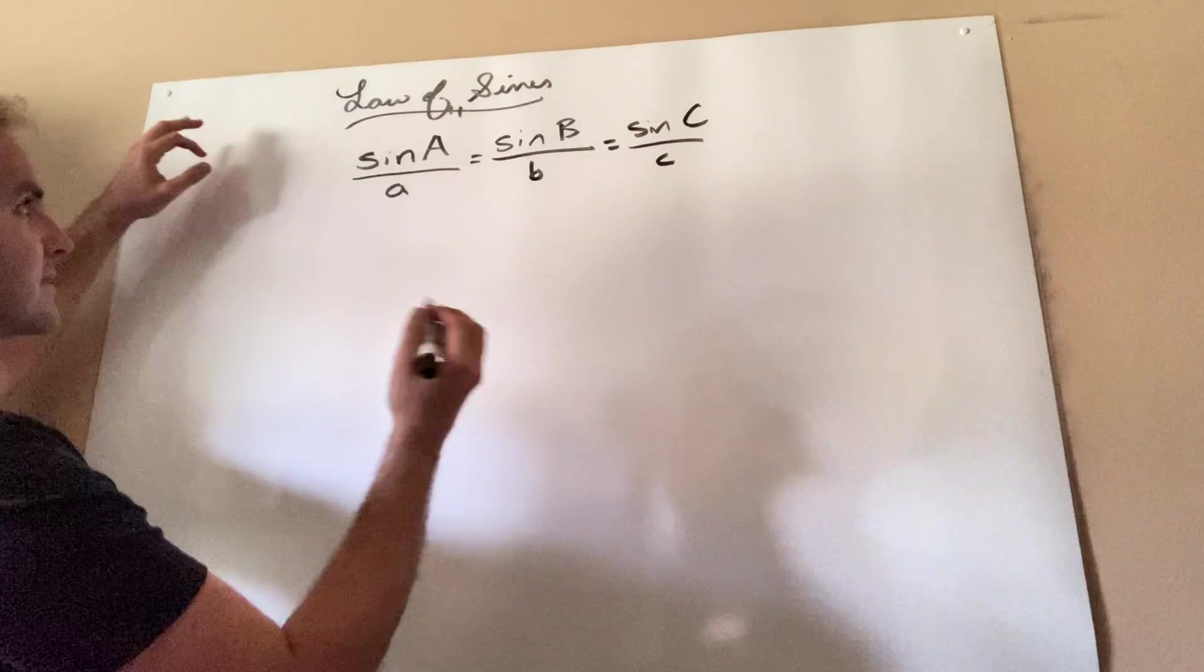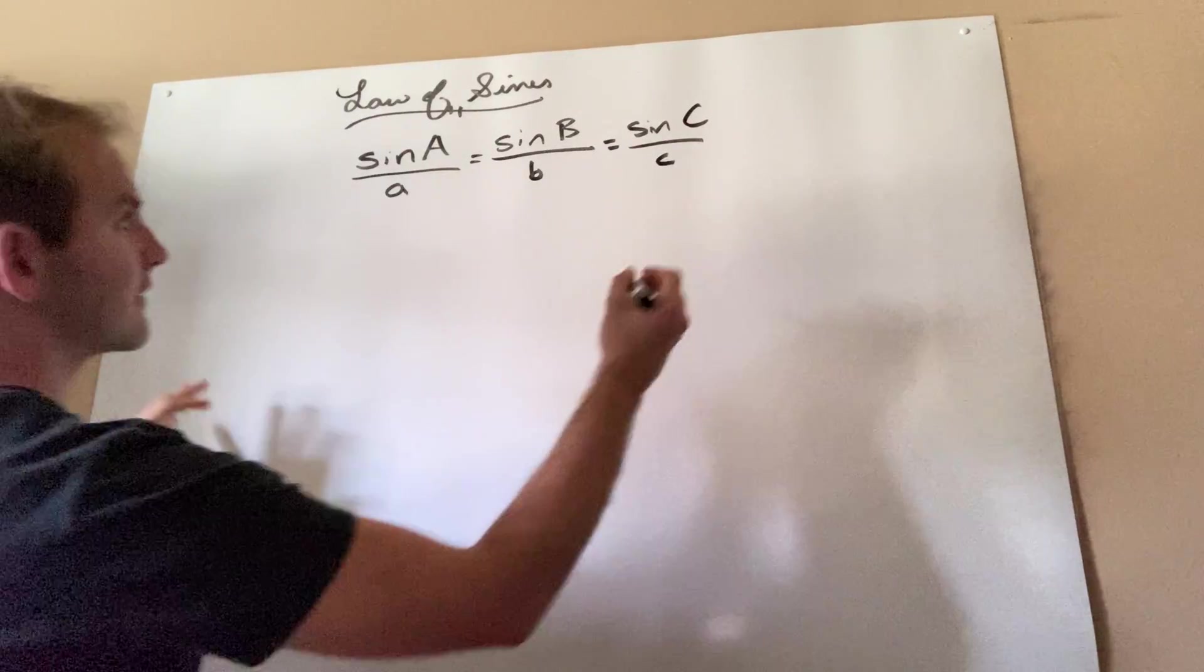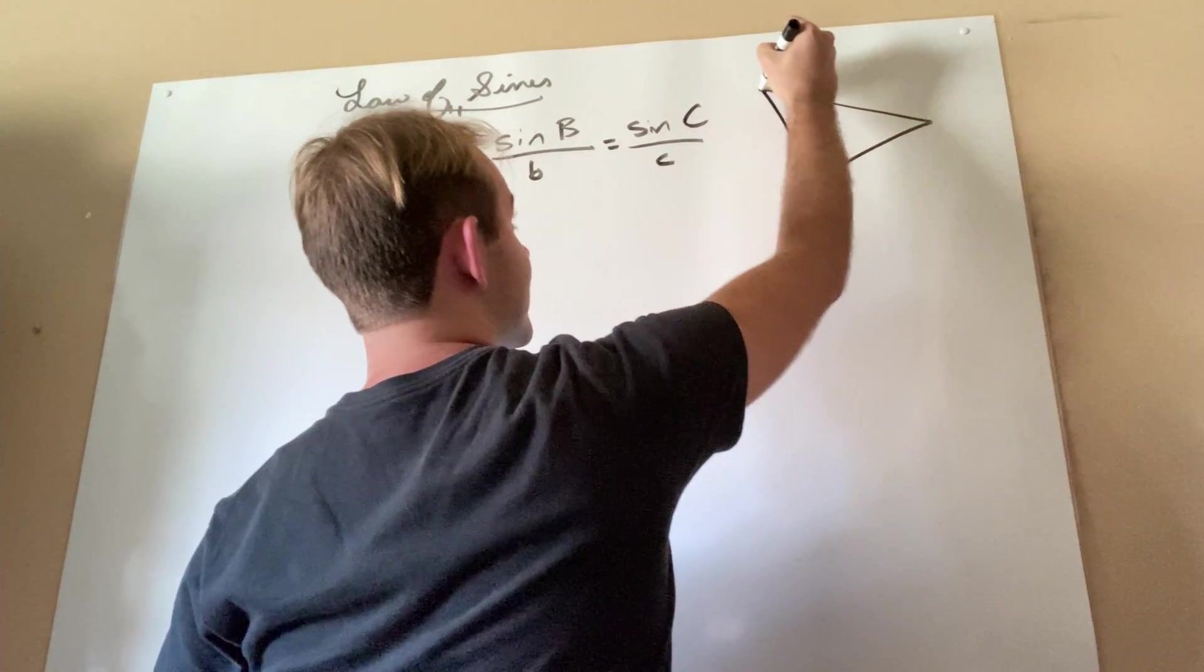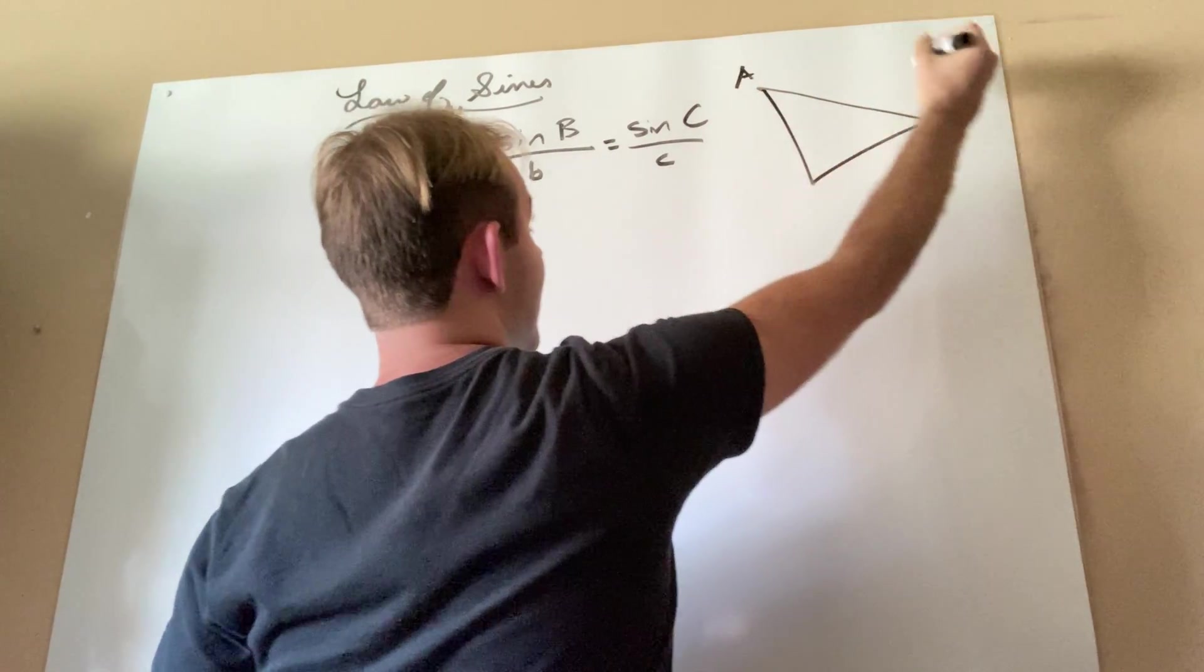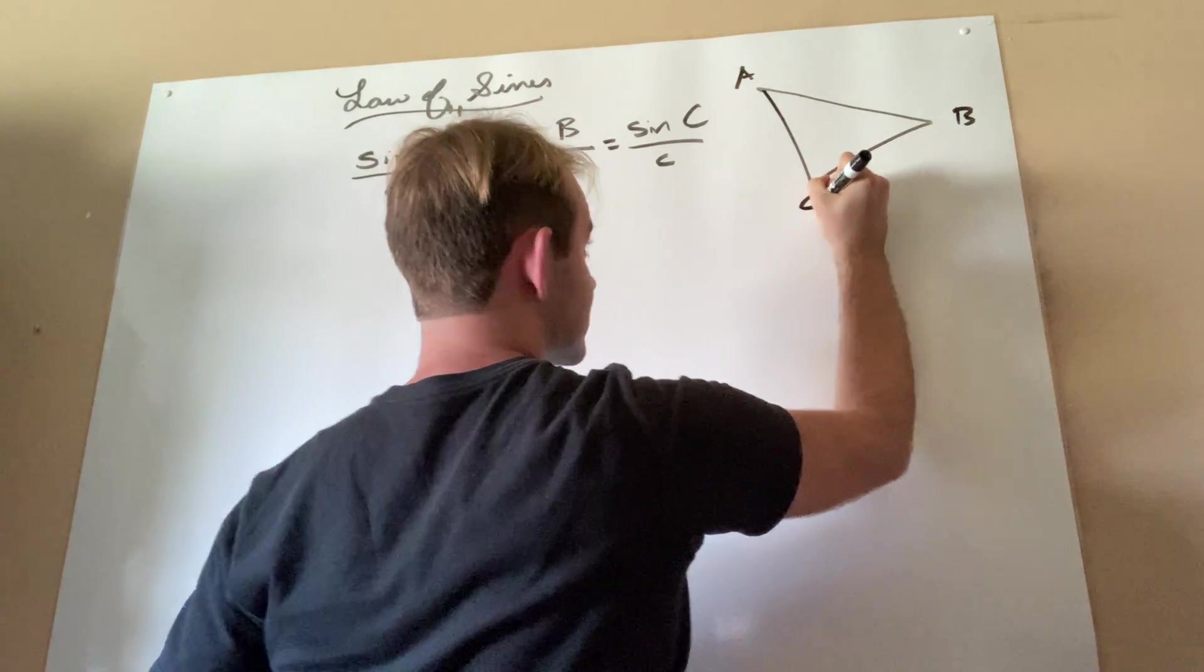Now what the heck does this actually look like? Let's just get a very basic picture here. So if I were to call this a, this b, and this c,